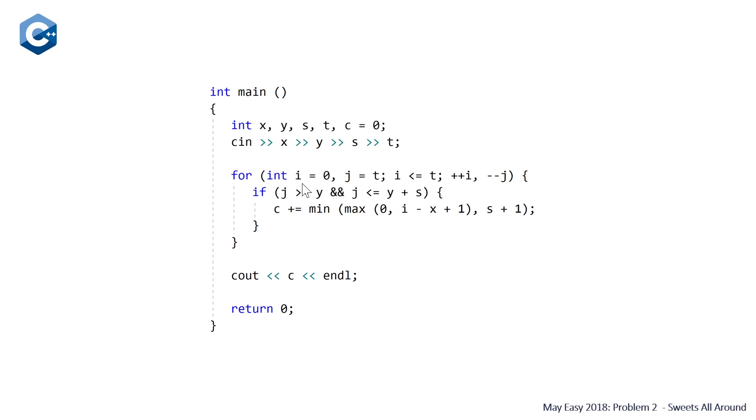Then we enter a for loop where we're initializing the two moving indices i, which is going to track the x coordinate, and j, which is going to track the y coordinate. i is initialized to zero, j is initialized to t, and we're going to do this while i is less than or equal to t, doing a pre-increment on i and a pre-decrement on j. Then we're checking if our moving y coordinate j is greater than or equal to y or less than or equal to y plus s, meaning it's in or on our square.